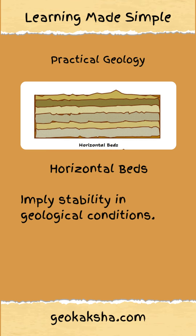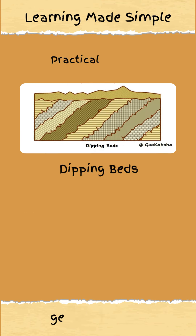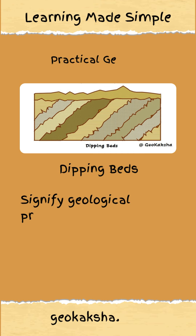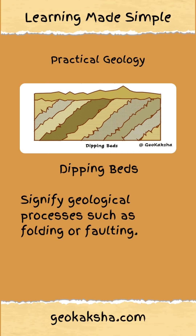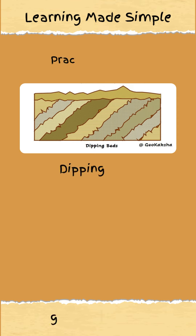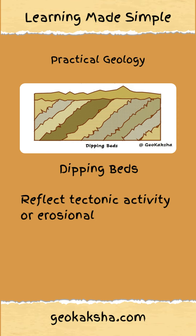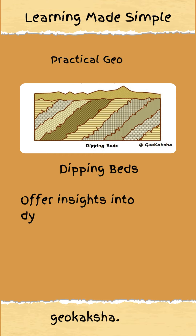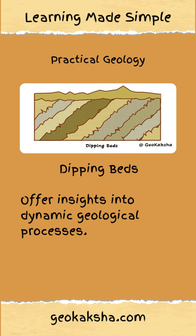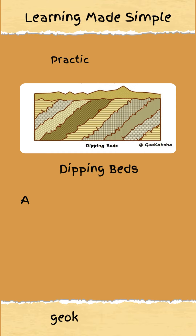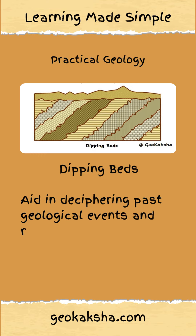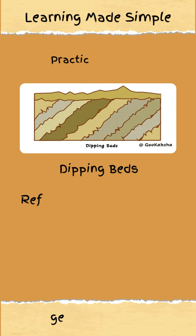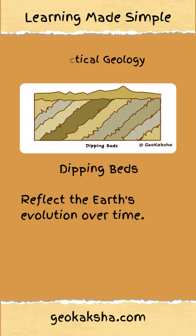Dipping beds incline at an angle, signifying geological processes such as folding or faulting. These beds reflect tectonic activity or erosional forces, offering insights into dynamic geological processes. Dipping beds aid in deciphering past geological events, reconstructing earth's history, and reflecting the earth's evolution over time.